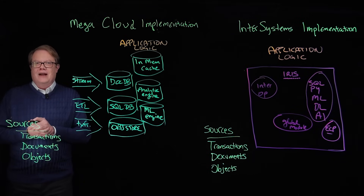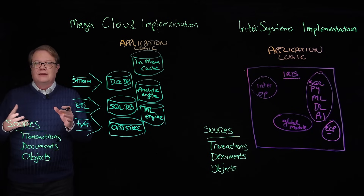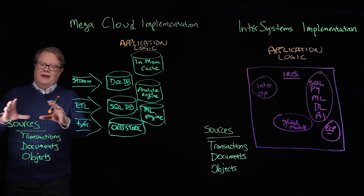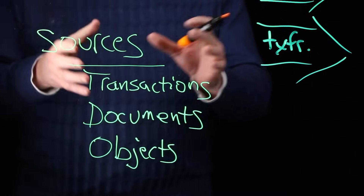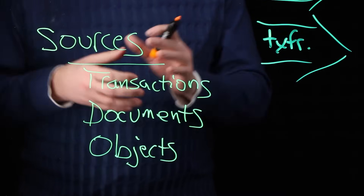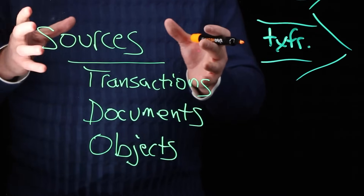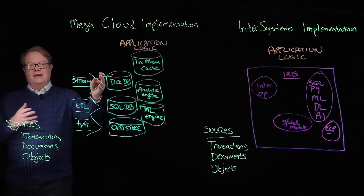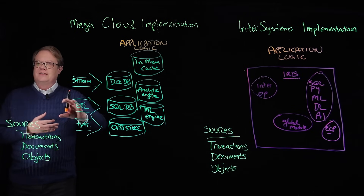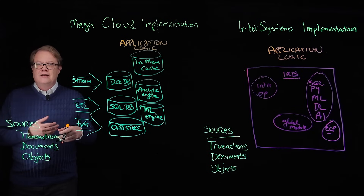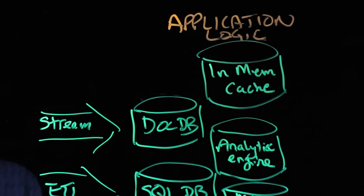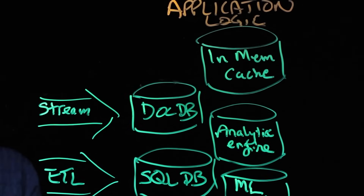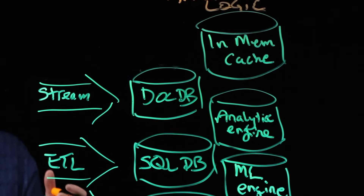Imagine you're an application developer and you need to build a data-centric, business-critical application. You've got data sources you have to find — could be transactions, documents, objects, whatever — and you need to get that data into your application space. You may have some streaming applications, some ETL processes, or bulk data movement processes.